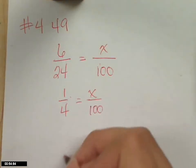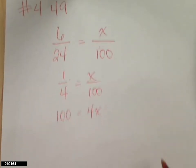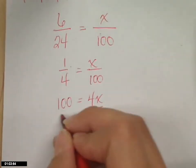Cross-multiply. One hundred times one is a hundred. Four times X is four X. Then, what do I do? Divide by what? Four. Both sides.